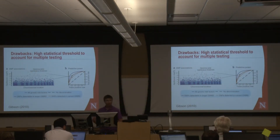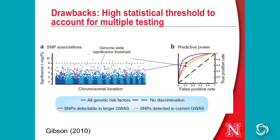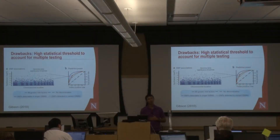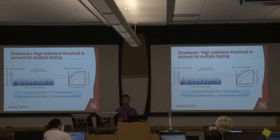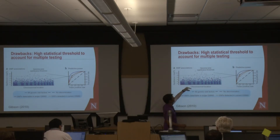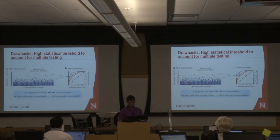Another problem is that in many association mapping panels, we have rapid LD decay, so we need lots of markers to ensure they are in high LD with our QTL. But this results in massive multiple testing problems. To ensure a good experiment-wise error rate and avoid too many false positives, we need to set a stringent statistical threshold. Once you set this stringent threshold, it's quite frankly difficult to declare any significant QTL. You might have real QTL in those regions that just don't quite make it above the statistical threshold.